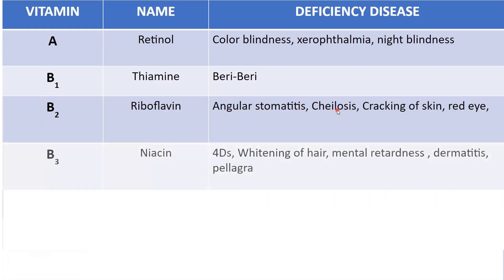Next is vitamin B3, called niacin. Niacin deficiency leads to the 4Ds: diarrhea, dermatitis, dementia, and death — possibly death if it reaches excess deficiency. The most prominent deficiency disease is pellagra, which is associated with darkening of the tongue, bleeding, whitening of hair, mental retardedness, and dermatitis.